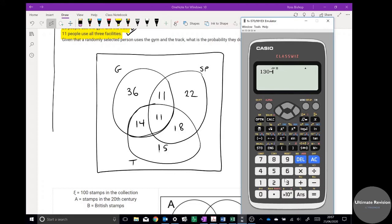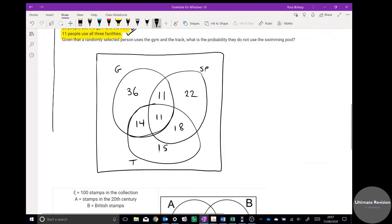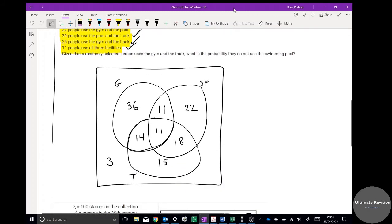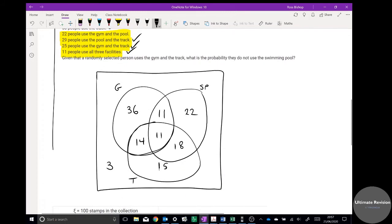130 are in the gym sports center at all, so there's going to be some that don't use any of those activities. 130 minus, and I've just got to make sure I don't miss any, equals 3. So there's 3 on the outside that don't do anything. Okay, now I've drawn this Venn diagram, it's going to really help here.